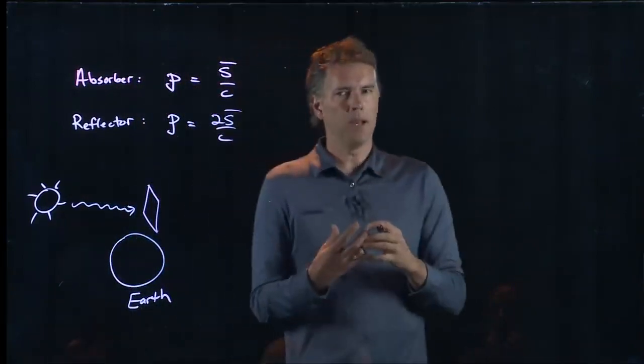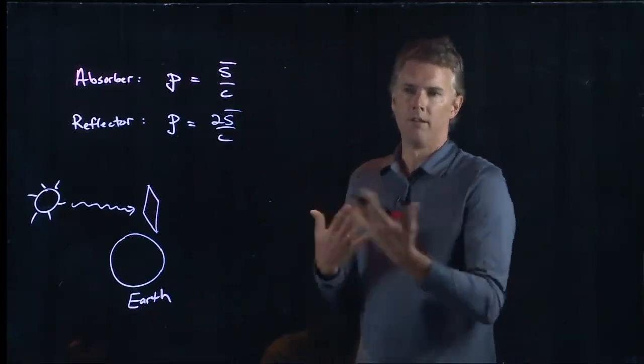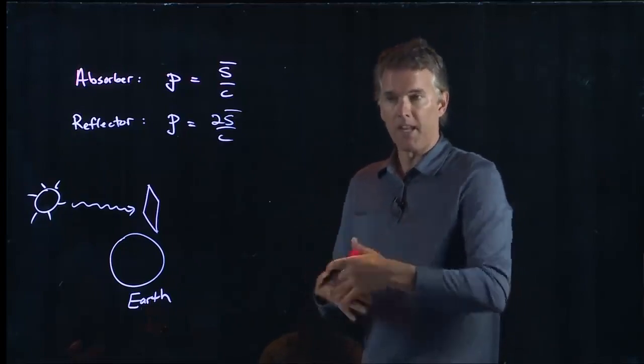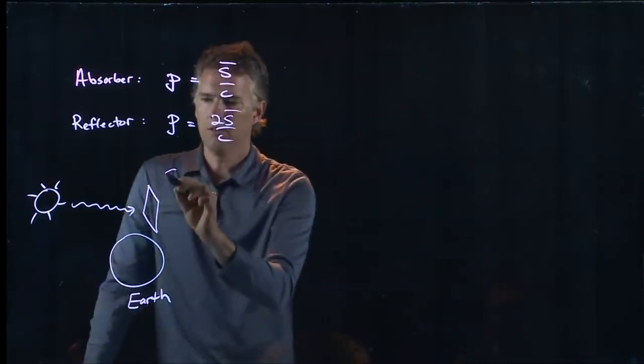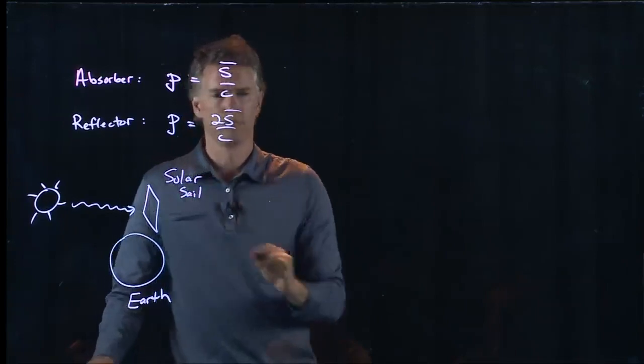Let's take a spaceship, send it up into outer space. And inside that spaceship, let's include a sheet of Teflon foil, or mylar, that expands when it gets into outer space. This is something called a solar sail.